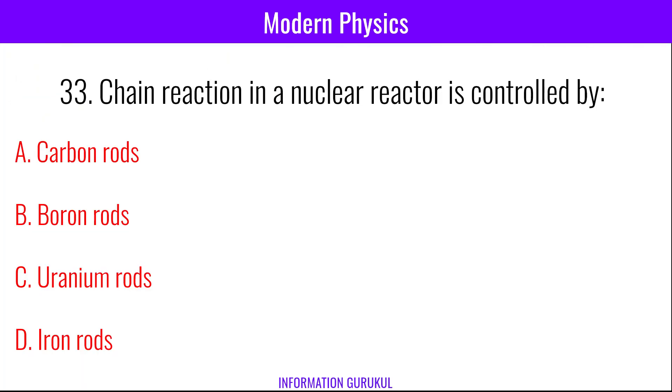Chain reaction in a nuclear reactor is controlled by boron rods.